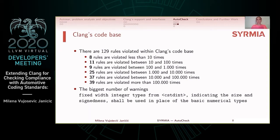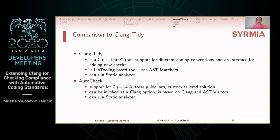Before we conclude, let us make a short comparison of ClangTidy and our AutoCheck tool. ClangTidy is a framework for writing code style checks — a C++ linter tool that gives support for different coding conventions and an interface for adding new checks. On the other hand, AutoCheck is a custom-tailored solution giving support only for C++14 AUTOSAR guidelines, which contain rules that can be much more complex than coding conventions. ClangTidy is a libtooling-based tool using abstract syntax tree matchers, while AutoCheck can be invoked as a CLANG option and is based on CLANG's visitors. Both ClangTidy and AutoCheck can run and use the Static Analyzer.